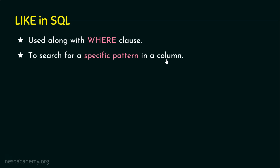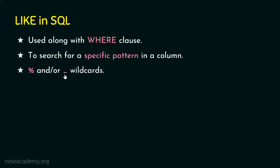What we are going to do now is use the WHERE clause with the LIKE keyword. So instead of a direct condition, we use LIKE to retrieve records by searching a specific pattern in a column. We have two wildcards for doing this: percentage (%) and underscore (_). We can use both or either one in our search query.